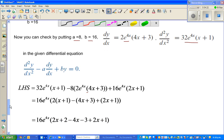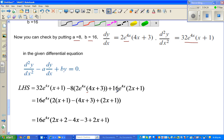Now what you can see here: what can you factor out? You can factor out 16e^(4x). This is also 16e^(4x), and here you have got 16e^(4x).